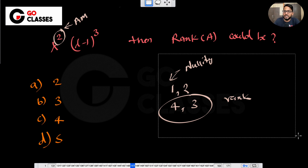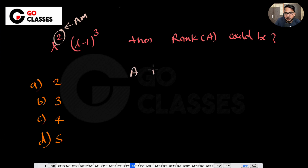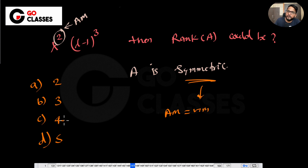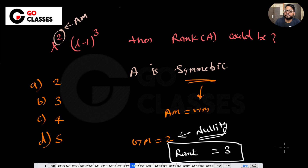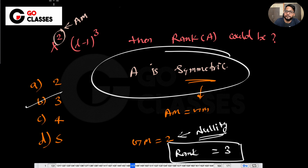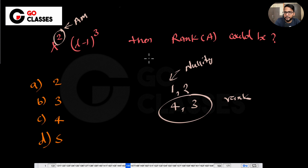But if they also say A is symmetric, then for symmetric matrices AM always equals GM. So the number of linearly independent eigenvectors is exactly equal to the AM, which is 2. Nullity is exactly 2, so rank = 5 - 2 = 3. If the matrix is not specified as symmetric, rank could be 3 or 4, since nullity could be 1 or 2.